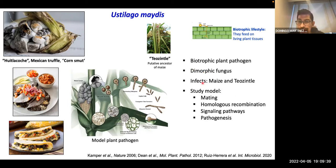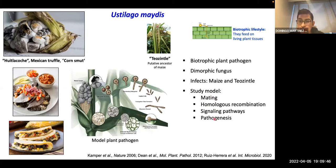Ustilago maydis induces infections in corn and teosinte, and it is a model fungus for studying mating, homologous recombination, signaling pathways, and pathogenesis.